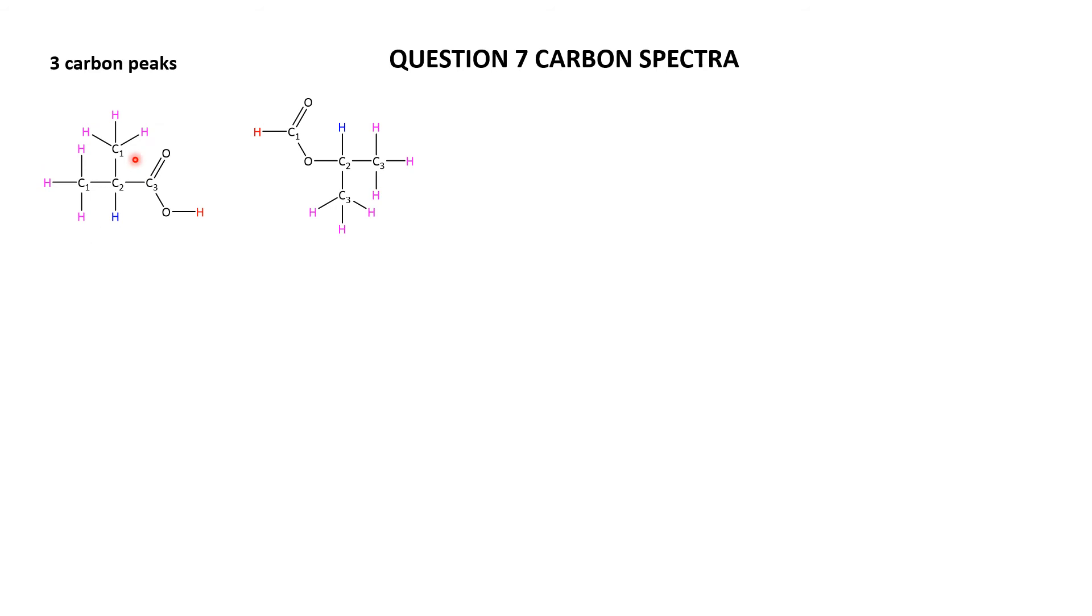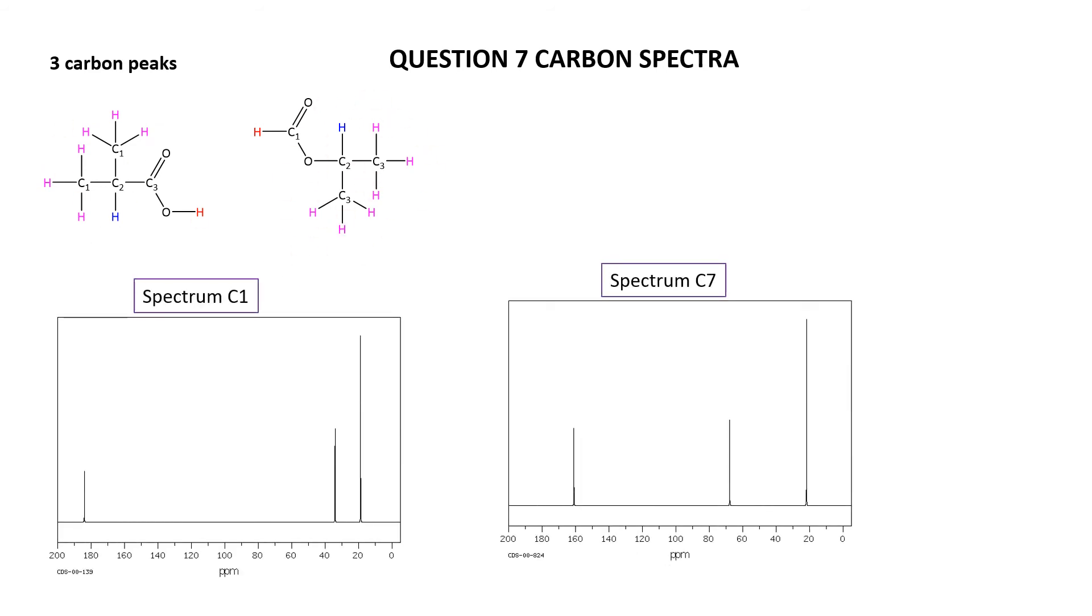Looking at a slightly bigger picture, these are isopropyl groups. OK, and then here are the two spectra, C1 and C7, that have three peaks in there. Now, let's go ahead and try and assign these.